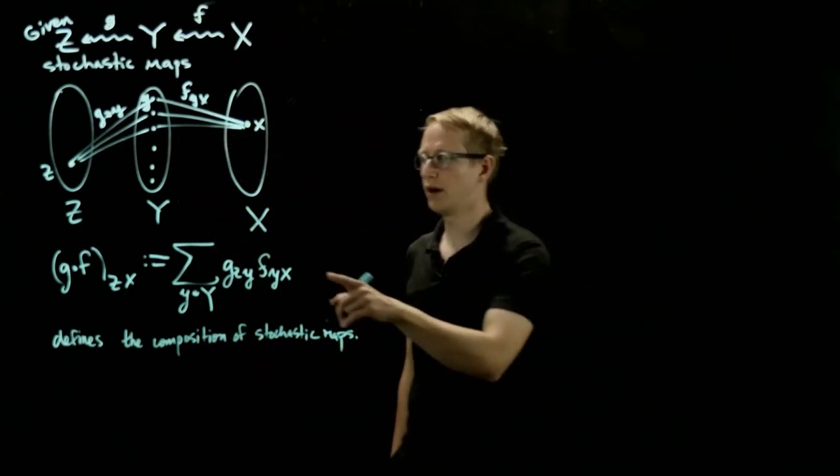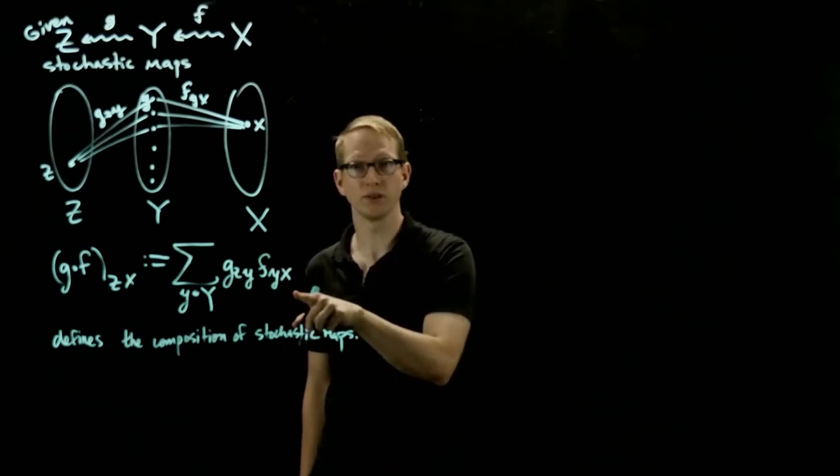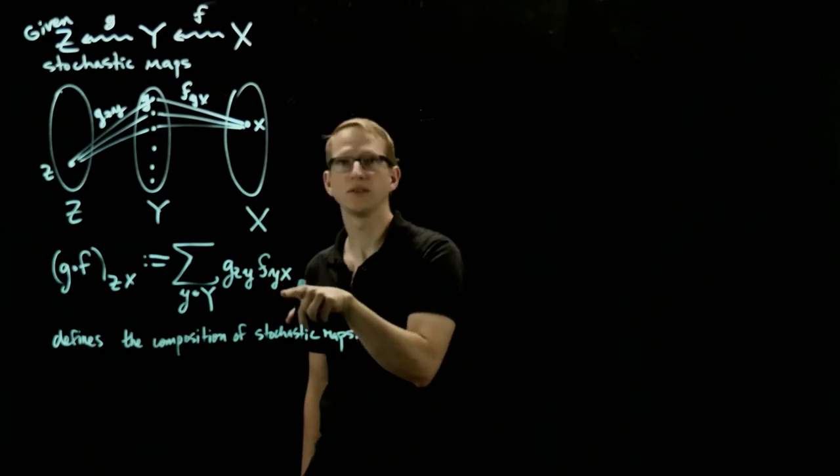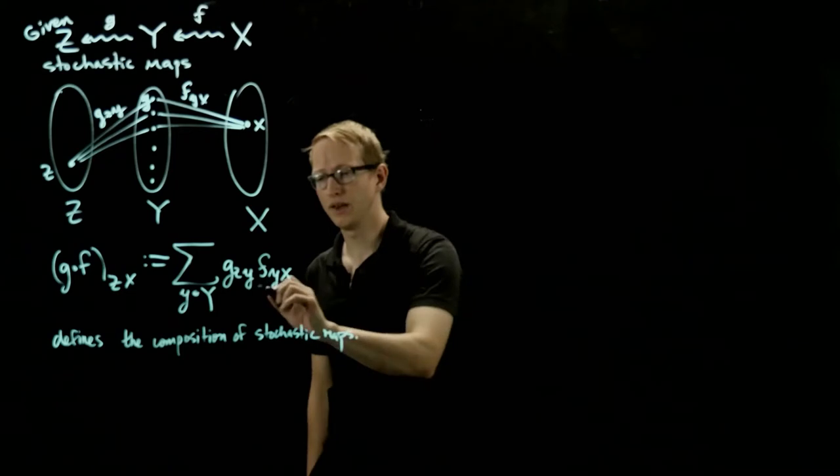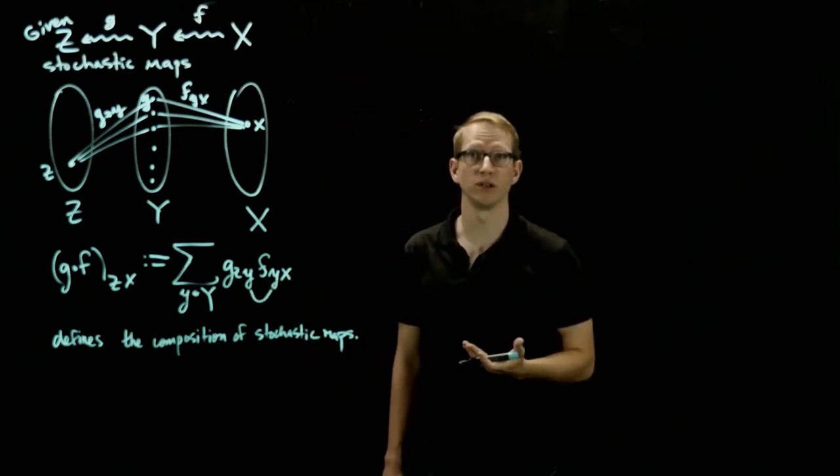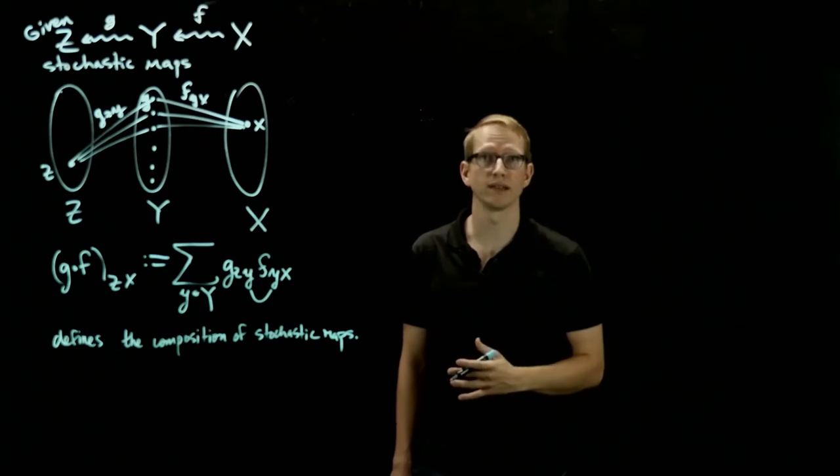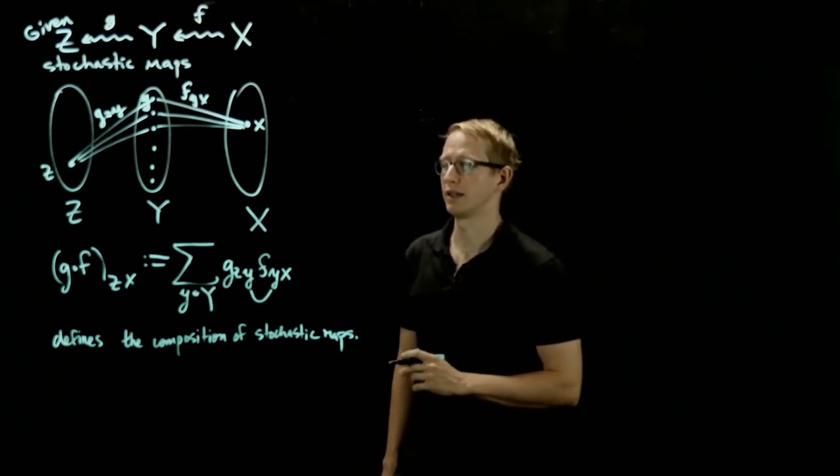And now you can see why I chose this notation earlier of writing our subscripts in this particular order, because if I think of these as matrices indexed by the elements of these sets that we have, then this ends up just being matrix multiplication. So sometimes these are also called stochastic matrices, but I'm going to stick to calling them stochastic maps.